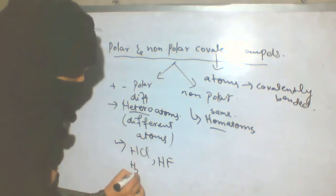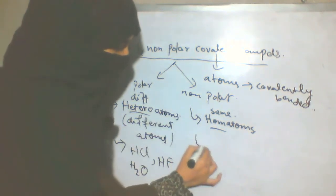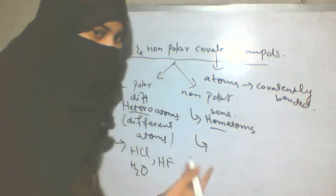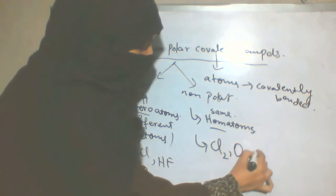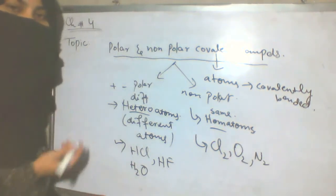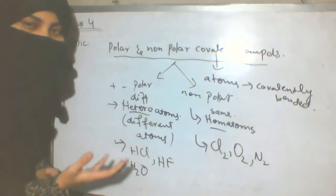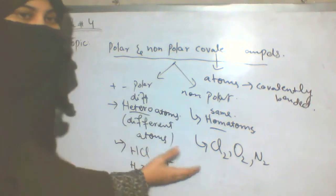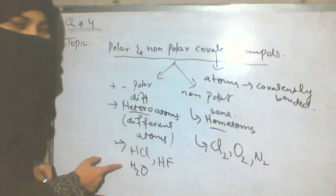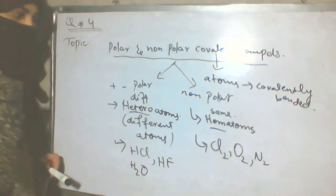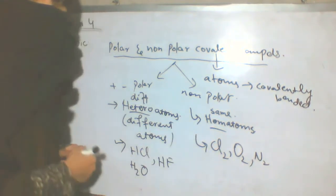For example, HCl is a polar compound. Homo atoms — similar atoms like Cl₂, O₂, N₂ — have the same atoms with similar electronegativity, so the bond is non-polar. With different atoms, the bond is polar.